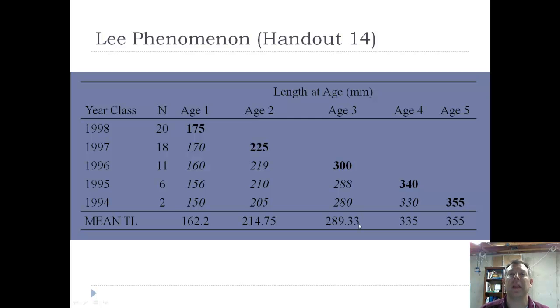Here's some summary data from handout 14. There's more information on there, but this is some data that shows the Lee phenomenon. This is a sample that was taken in 1999. So you see that we had 20 H1 fish, 18 H2 fish, 11 H3, 6 H4, and 2 H5. So we've got some old fish, and we've got some young fish.